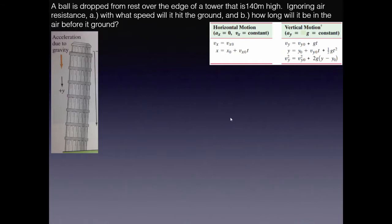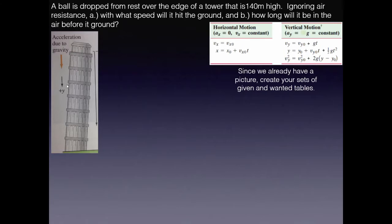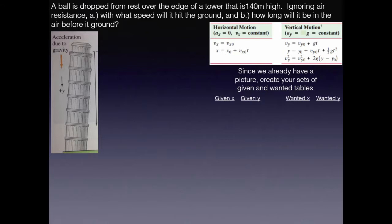We are dealing completely with vertical motion here, so horizontal equations won't matter much. Since the picture tells us to choose positive downwards, we create our given-and-wanted tables. For the x-direction, all values — x₀, xf, vx₀, and vxf — are zero, since we're falling straight down. For the y-direction, we set y₀ = 0 at the top and yf = 140 m at the bottom, with positive downward.